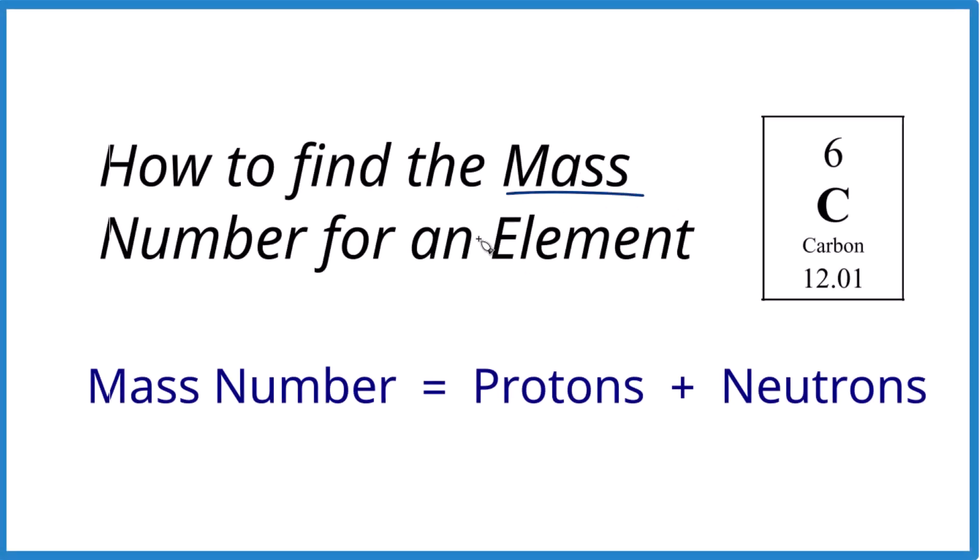So we're going to take a look at how to find the mass number for an element. So here's the thing. Mass number equals protons plus neutrons.